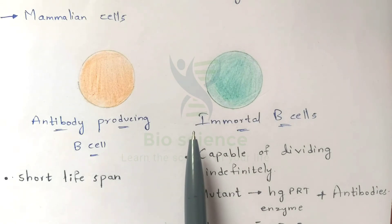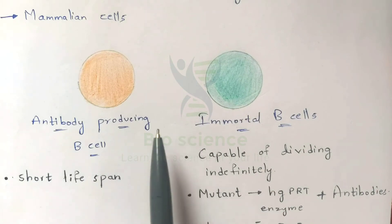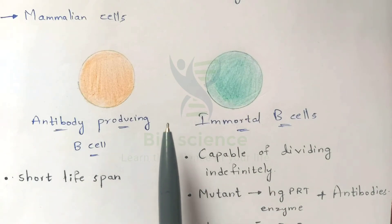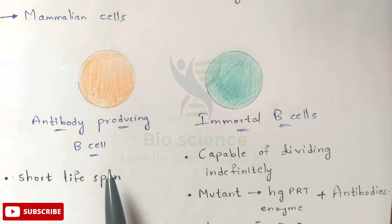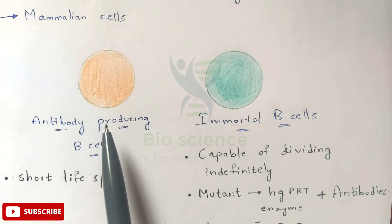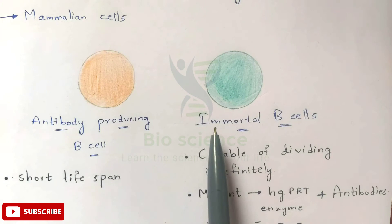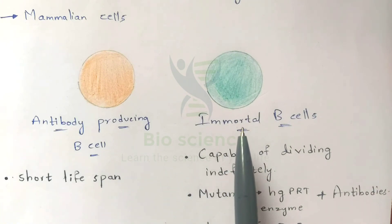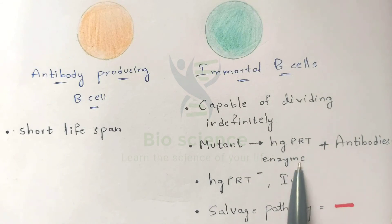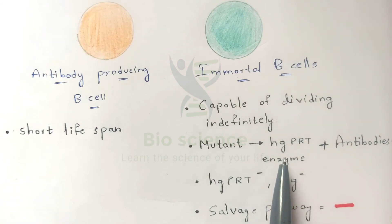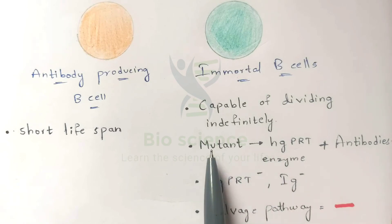To do the experiment, you need to know the properties of both cells. The antibody-producing B cell has a short lifespan — it can easily lead to death within a short period. The immortal B cell is capable of dividing indefinitely. The immortal B cell also carries a mutant HGPRT enzyme and is Ig-negative (Ig meaning immunoglobulin, another name for antibody).